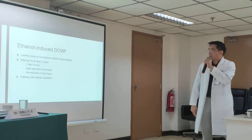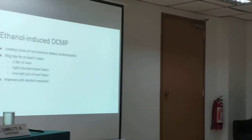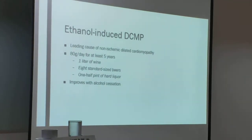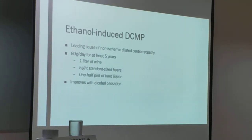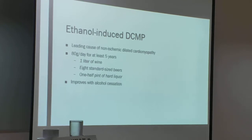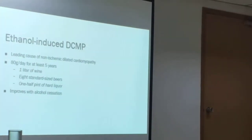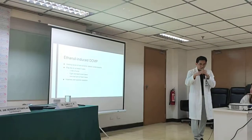Ethanol-induced dilated cardiomyopathy is actually the leading cause of non-ischemic dilated cardiomyopathy. You need to take at least 80 grams per day for at least five years — that's about one liter of wine, eight standard beers, or half a pint of hard liquor per day. So it really applies to hard drinkers. The good thing is that it improves with alcohol cessation — if you stop drinking, you can reverse the effects.